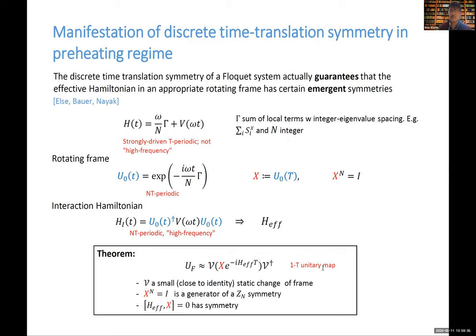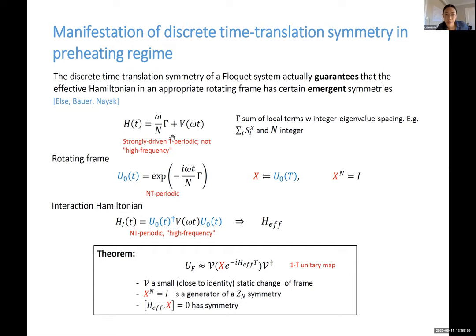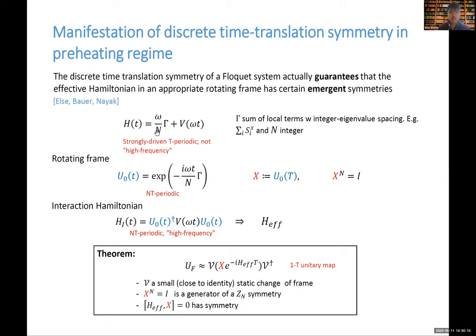A question arises about the rotating frame. The rotating frame is with respect to the large-amplitude piece of the drive, introducing a unitary transformation U_0(t) to eliminate the omega/N times gamma term. Once you go into this frame, that term goes away. The V and V-dagger in the theorem are simply dressings — small changes of frame. The statement is that in an appropriate dressed frame, the symmetry emerges even though the original Hamiltonian need not commute with X.